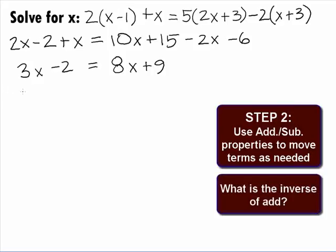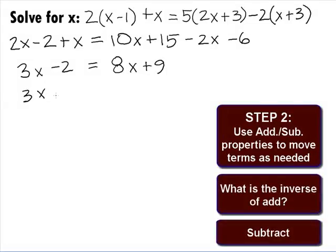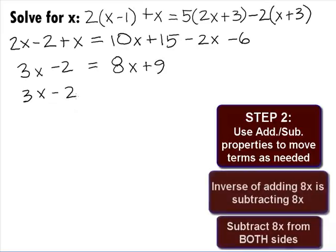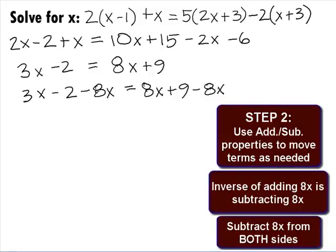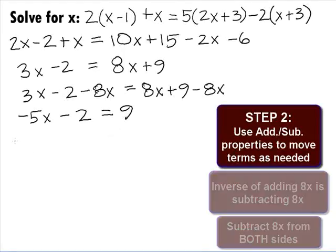What is the inverse of add? Subtract. So, we need to subtract 8x from both sides. On the left side, we'll end up with 3x minus 2 minus 8x equals and on the right side, we get 8x plus 9 minus 8x. On the left side, when we combine the 3x minus 8x, we get a negative 5x minus 2 equals on the right side, the 8x's cancel and we have plus 9.